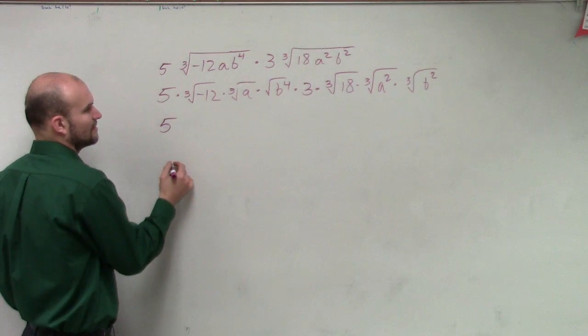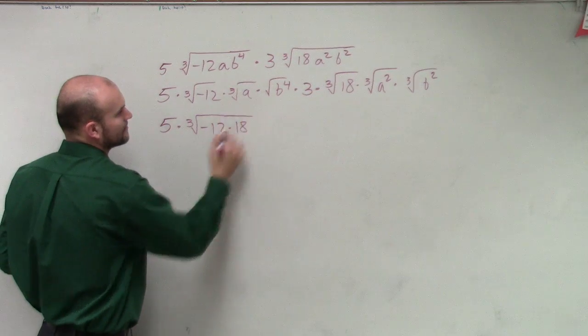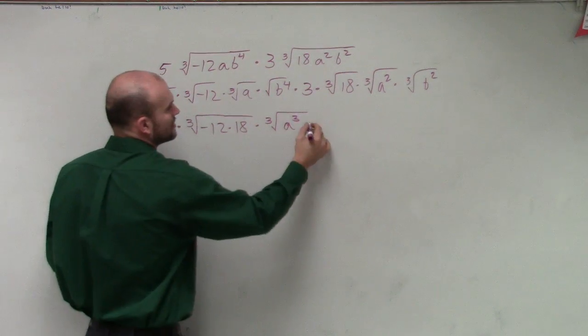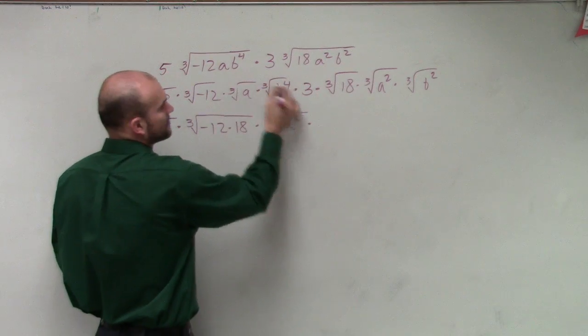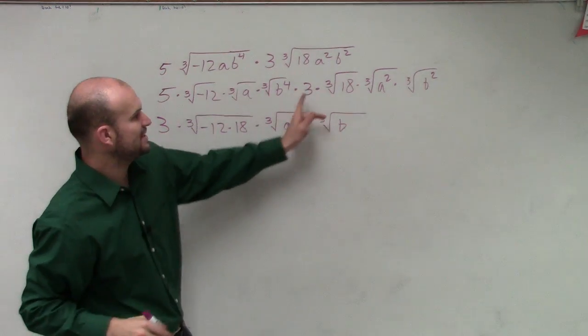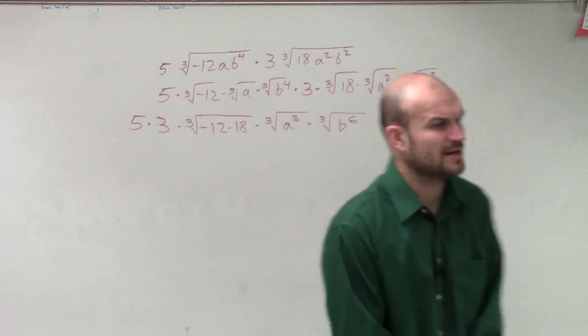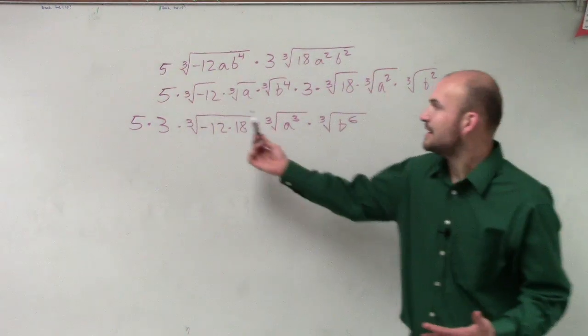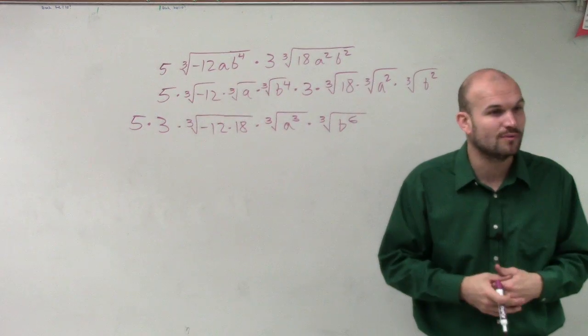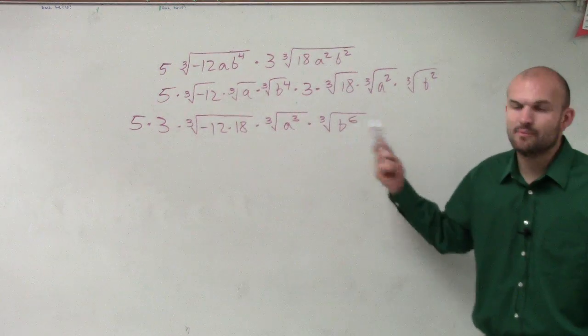So let's rewrite this as 5 times the cube root of negative 12 times 18 times the cube root of a times a squared, which would be a cubed times the cube root of b, that's 5 times 3, right? And that's going to be b to the 4 times b squared, which is b to the 6th power. So do you guys see what I kind of did here? I kind of did an extra step that I'm not going to require you guys to do, but what I want you guys to understand is if you break this all up, product, right, product, it doesn't matter if you do 3 times 4 or 4 times 3, right? You can rearrange it however you want to. So since I'm just going to rearrange them, I'm going to rearrange them so I'm multiplying my numbers, multiplying my a's, and multiplying my b's.